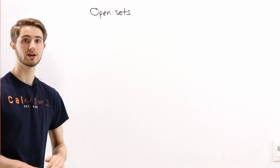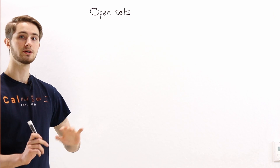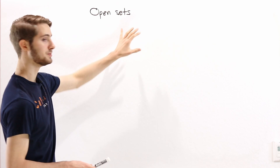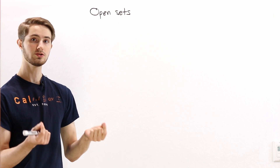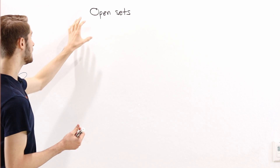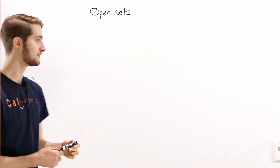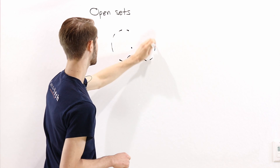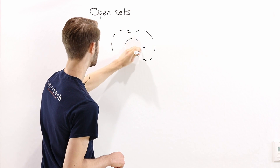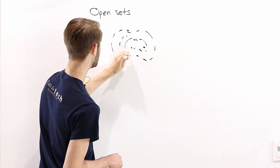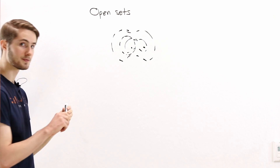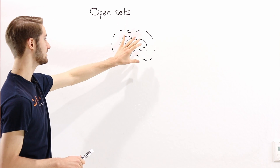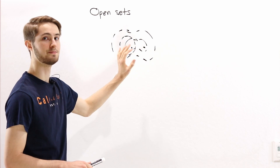Open sets have to satisfy some special properties, but we don't need to worry about those for now. What matters is that once we have these open sets, we can say that two points are close to each other if there are a lot of open sets that contain both of them. For example, we might have some open sets that contain both points, and the closer the two points are, the more open sets there will be containing both of them at the same time.